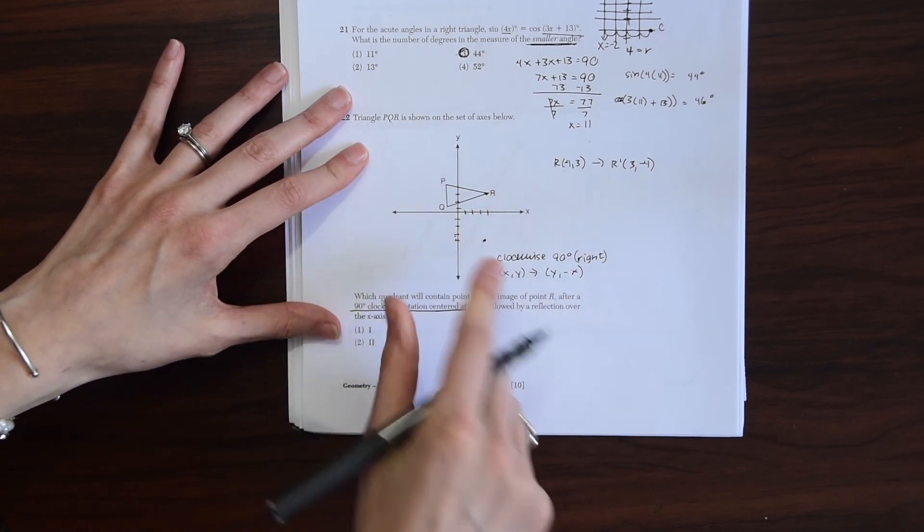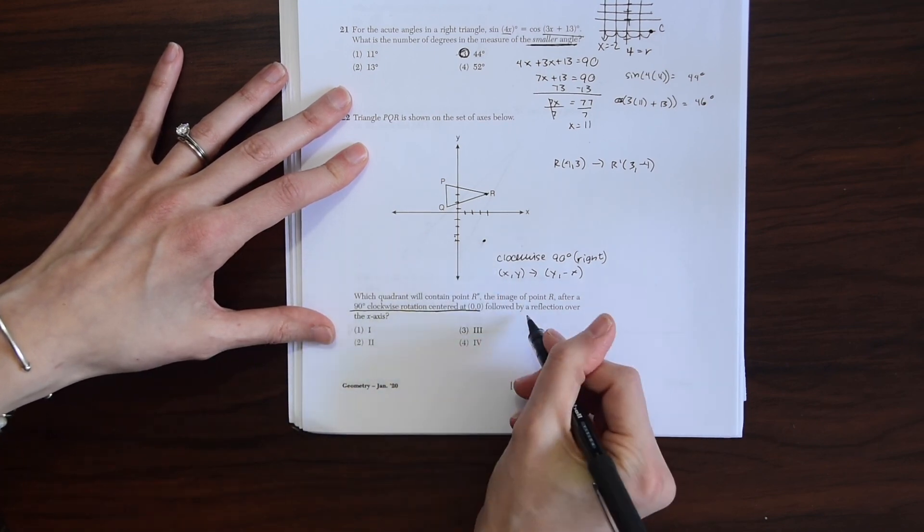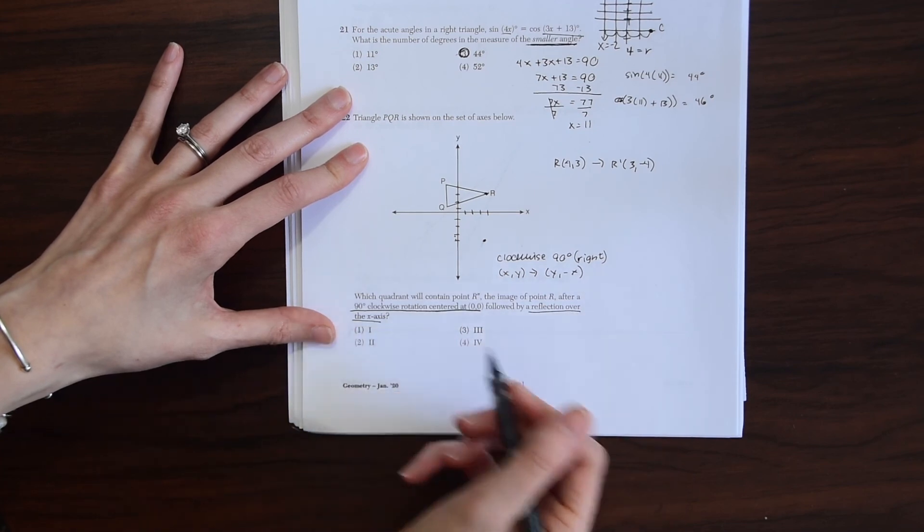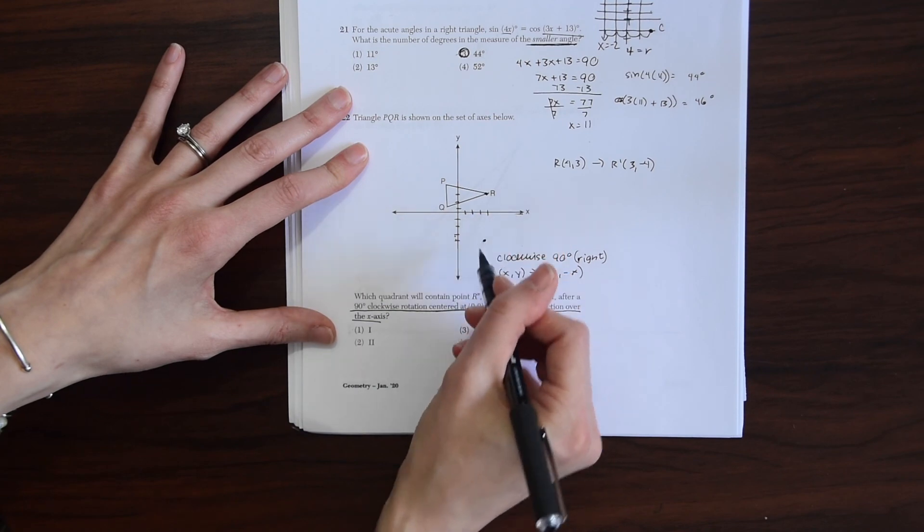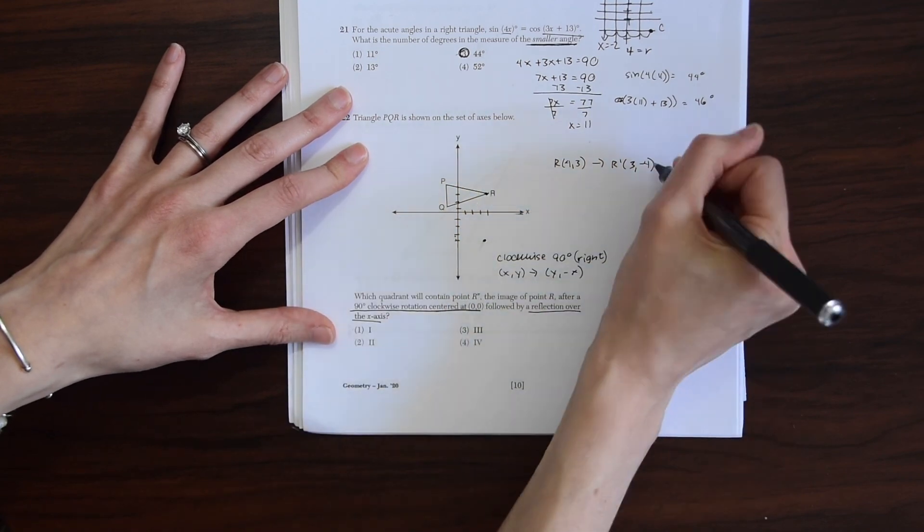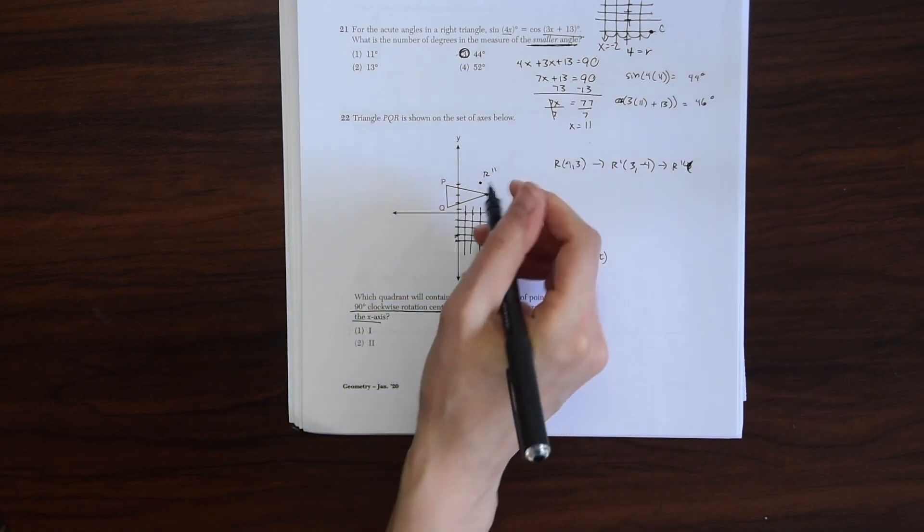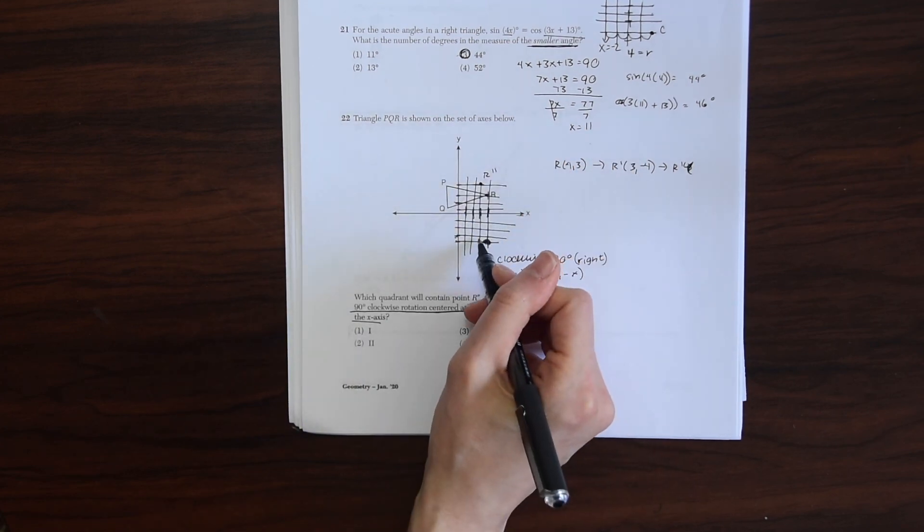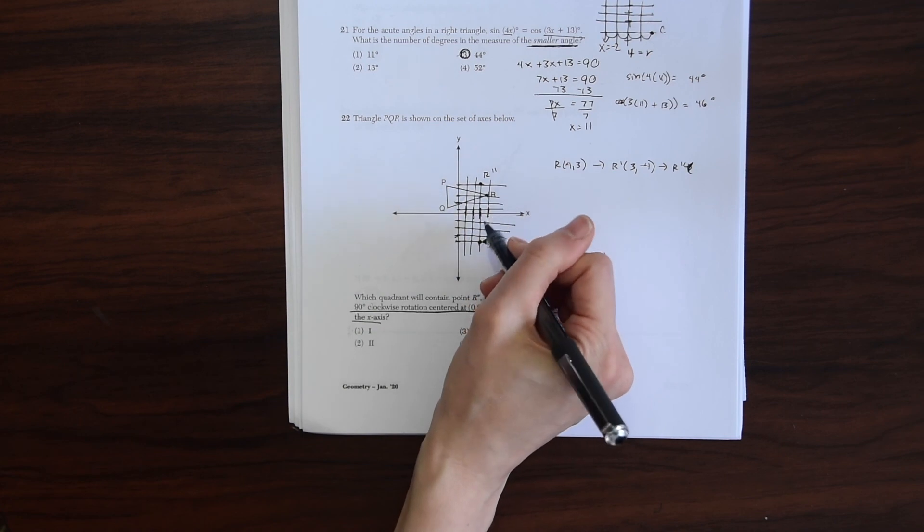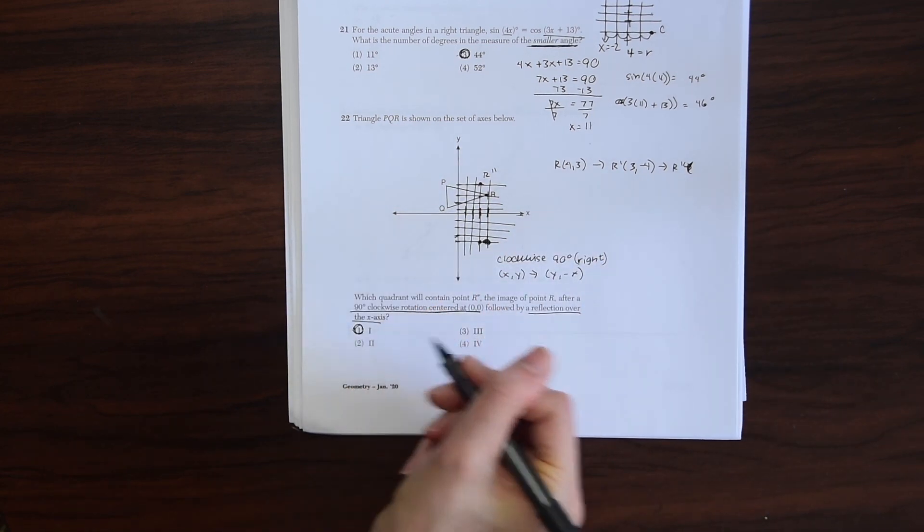So we end up at 3, negative 4, which is about where we drew this dot. And then this is followed by reflection over the x-axis. So over the x-axis, that's over this line. So you just end up back in quadrant 1. Because if we were to reflect this over the x-axis, that's where we end up. Notice this is 4 units away, 1, 2, 3, 4 from the x-axis. And then this on the other side will now also be 4 units away, 1, 2, 3, 4. So we know that the answer is quadrant 1.